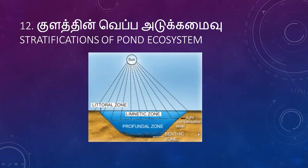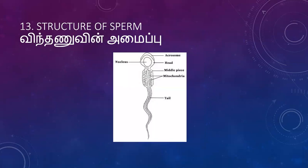Then zoology — structure of spermatozoa: head, middle piece, tail, and neck. The acrosome secretes hyaluronidase and sperm lysin. The middle piece contains mitochondria, which provide energy.